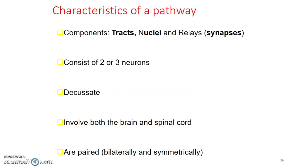What are the characteristics of a pathway? A pathway is made up of tracts, nuclei, and relays or synapses between nerves. It's usually composed of two or three neurons: first-order, second-order, and third-order neurons. Some pathways have decussation, where the tracts cross the midline from right to left or left to right. Pathways involve both the brain and spinal cord and are usually paired — symmetric or bilateral.